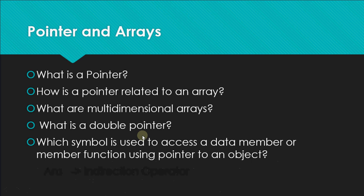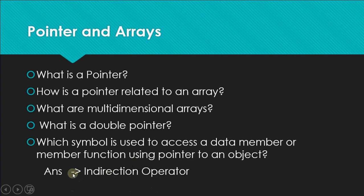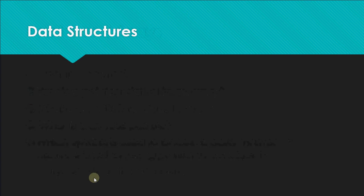Which symbol is used to access a data member or member function using a pointer to an object? If you have a pointer to an object, you don't use the dot operator. Instead, you use the indirection operator, represented by a hyphen and greater-than sign (->). For example, instead of p.input(), you write p->input(). The dot operator is called the member-of operator.